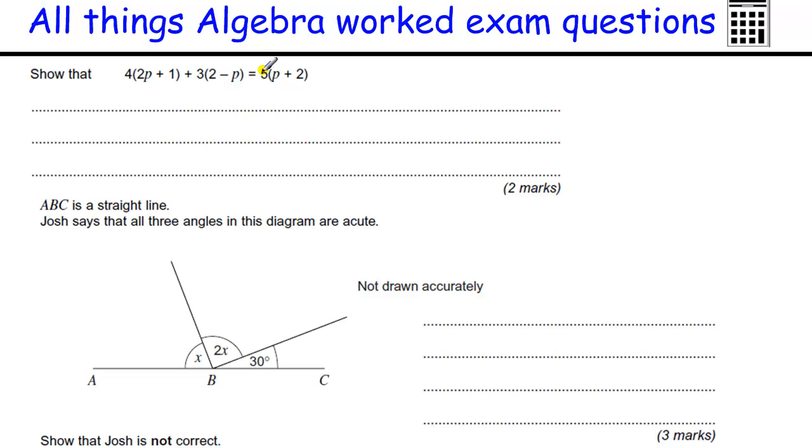Show that this is true. When we're trying to show something, this part we just ignore. This is just like telling us the answer. We can check this after we've finished. So just multiply out these brackets, so we get 4 lots of 2P is 8P. 4 lots of 1 is 4. 3 lots of 2 is 6. And 3 lots of minus P is minus 3P. 8P minus 3P is 5P. And 4 plus 6 is 10.